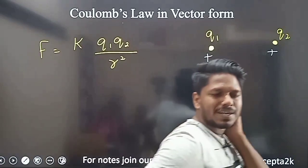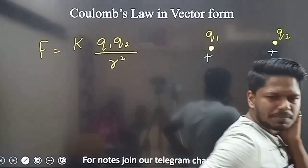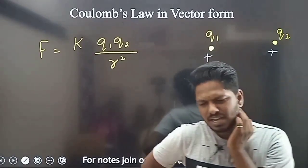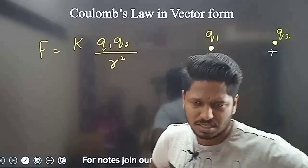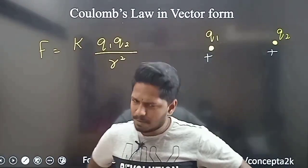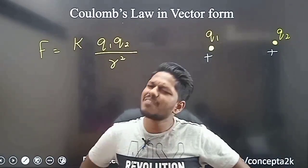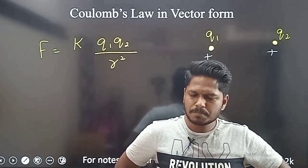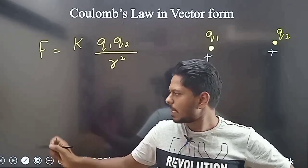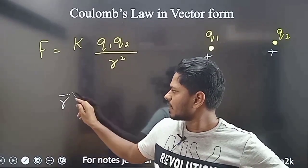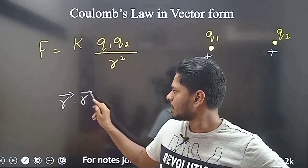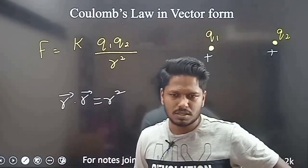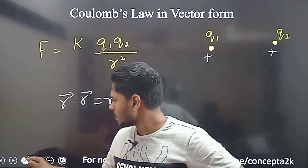If you represent anything, you can represent the direction. K is constant. Charge is scalar. Distance squared is scalar. If you multiply an r-vector with an r-vector, you get r-squared, which is a scalar quantity. So there is no vector on the right-hand side as written — that's why you have to think about it.